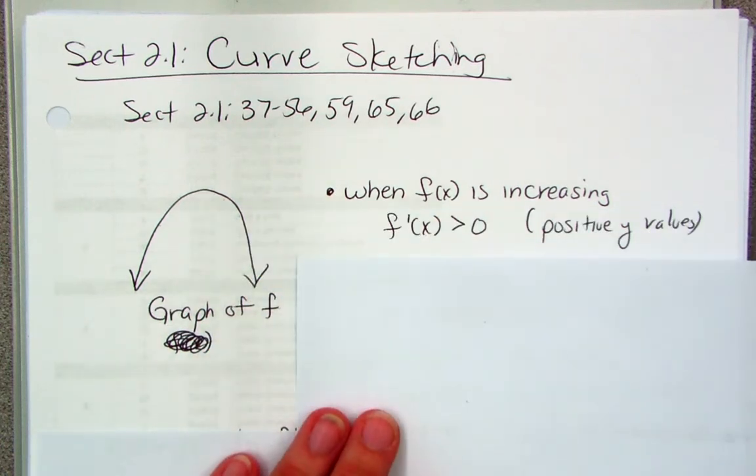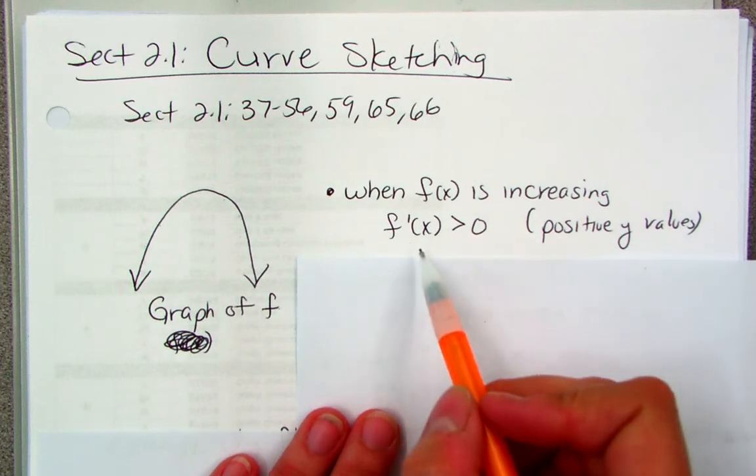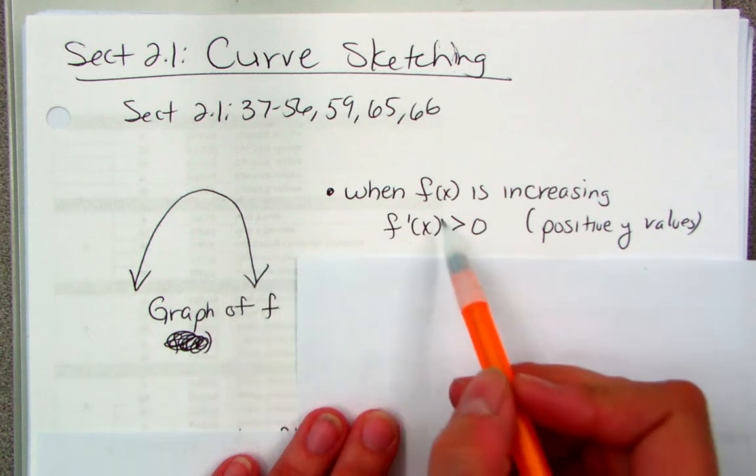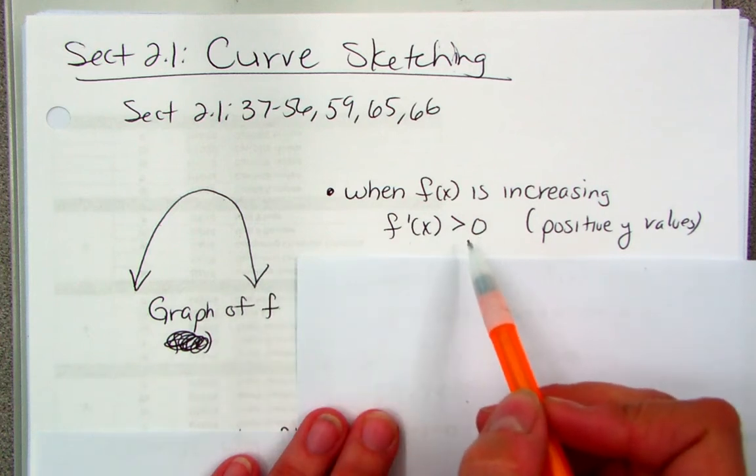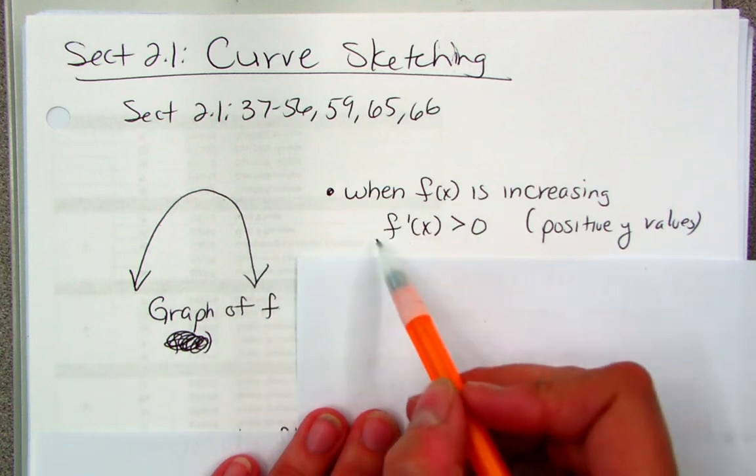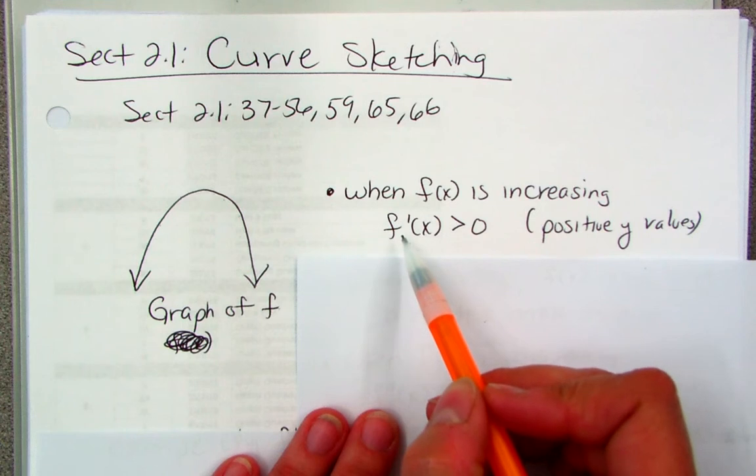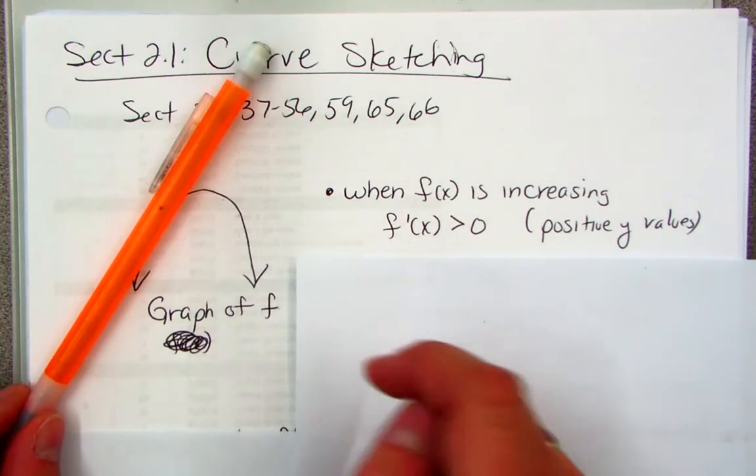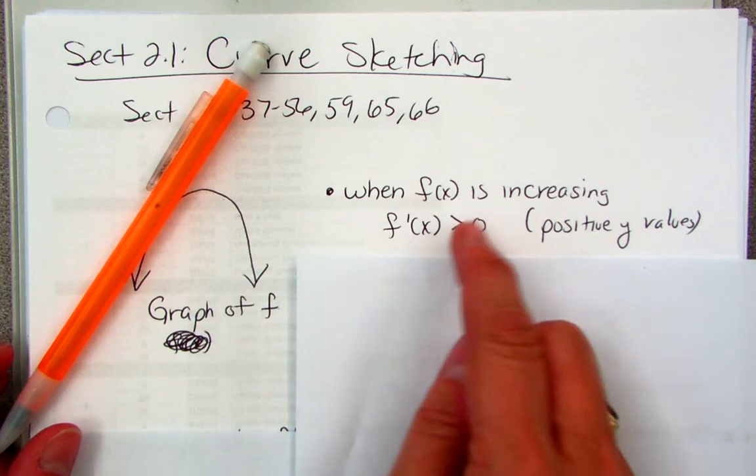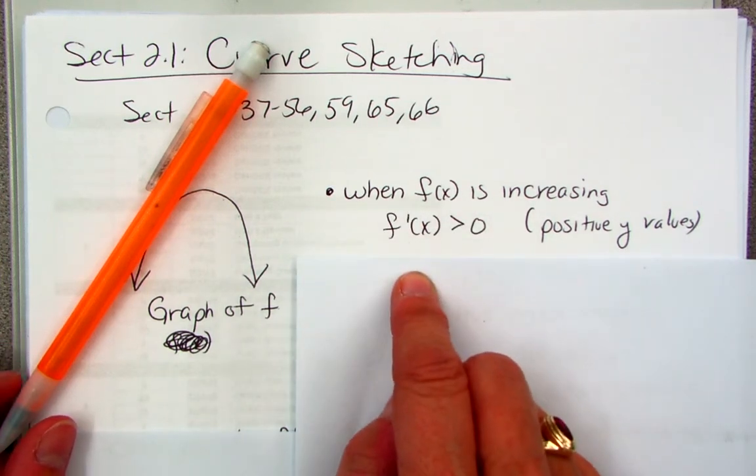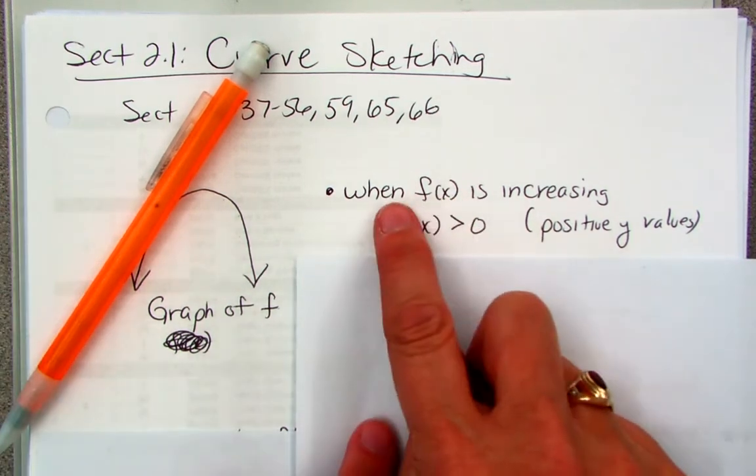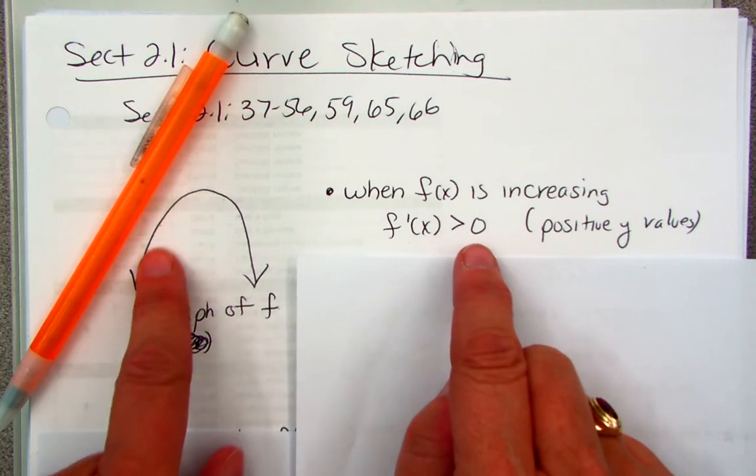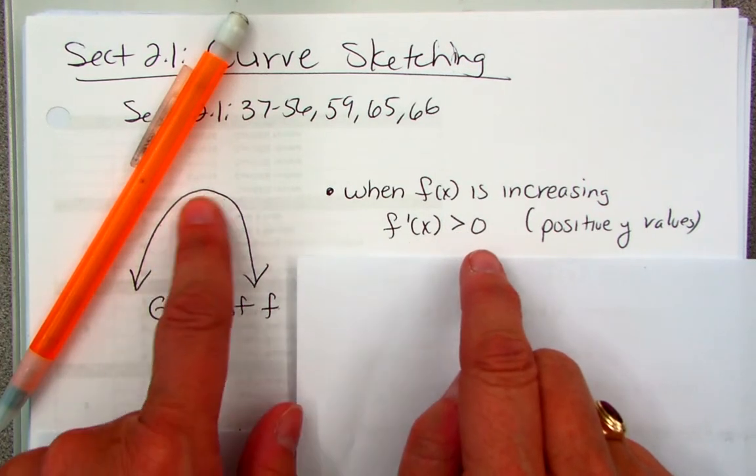Then, the first derivative, or the slope of the tangent line to the graph of f is greater than zero. Okay, what is that again? This is the slope of the tangent line to this graph, and we're saying that they're going to be positive values. So when what? When my y's are increasing. That's on this side. That's where my y's are increasing.